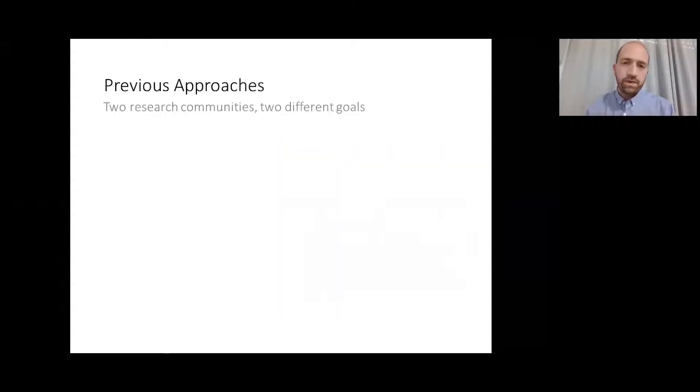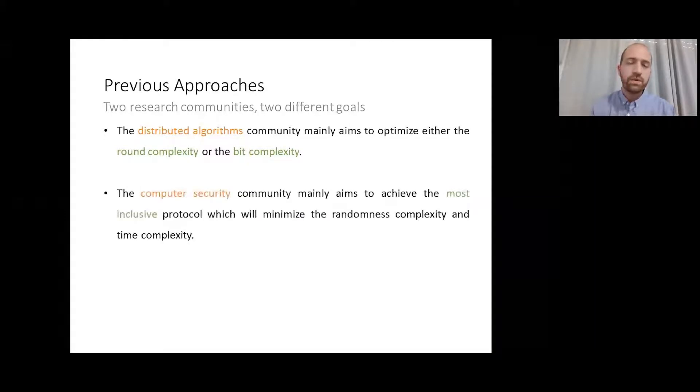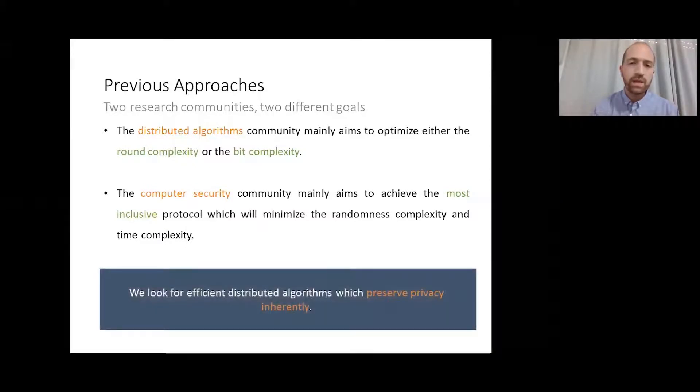So these two research areas share many similarities. However, the perspectives for the problem are a little different. While the distributed algorithms community traditionally looks for efficient algorithms to solve specific problems, the computer security community looks for the most generalized and inclusive protocols which will offer a secure solution for many problems. We try to get the best of both worlds by identifying some distributed algorithm families which preserve privacy inherently, canceling the need to apply special security protocols, which will come with additional overhead of course.